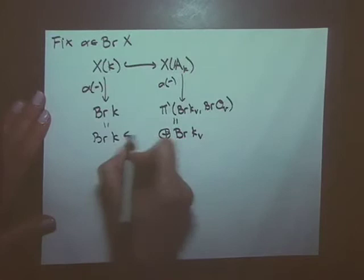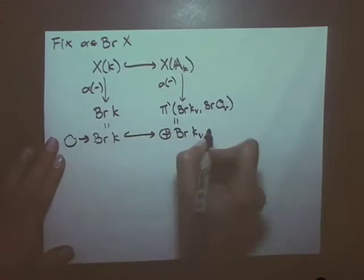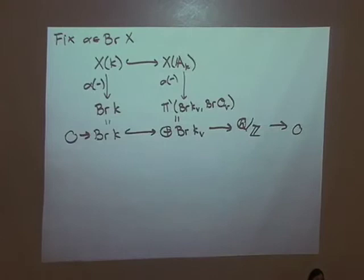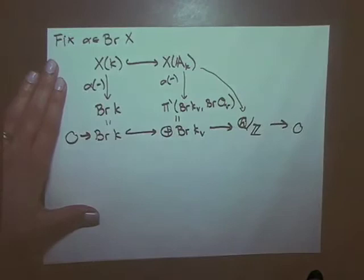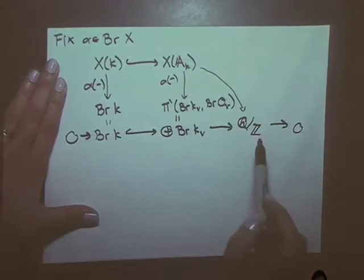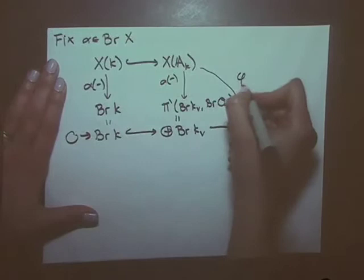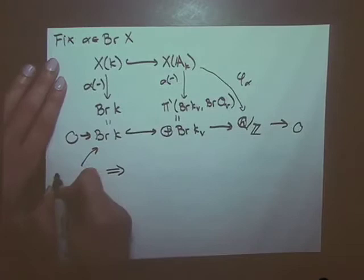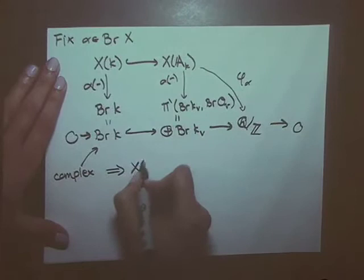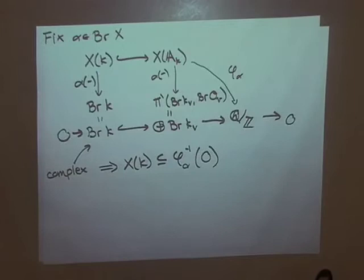We embed diagonally; the diagram commutes. If you've taken class field theory, you know how to fill in this row — when you have an injection from Br(K) into the completions you have to fill it in. If I have an adelic point, I can evaluate it under α and go to Q/Z. If I knew it came from a rational point, the bottom is a complex, so the set of K-rational points land inside the inverse image of zero under this map φ_α.